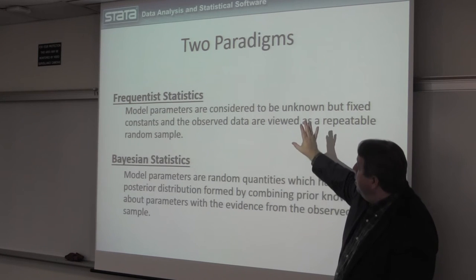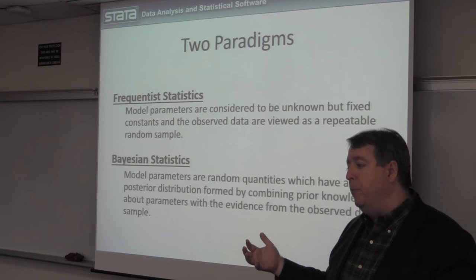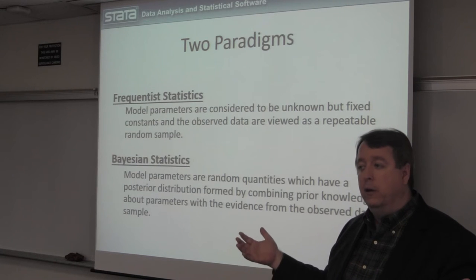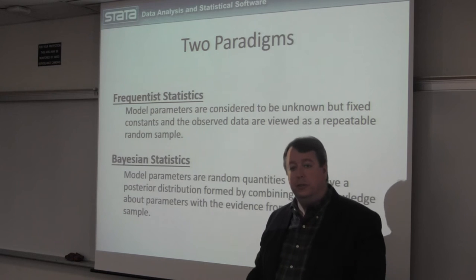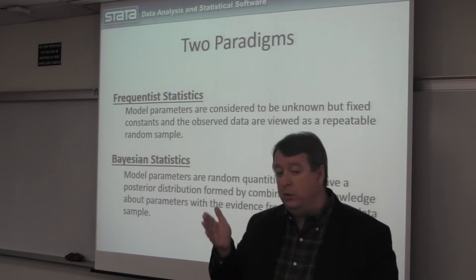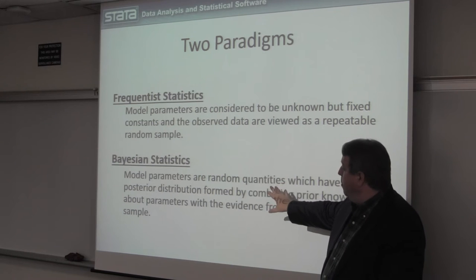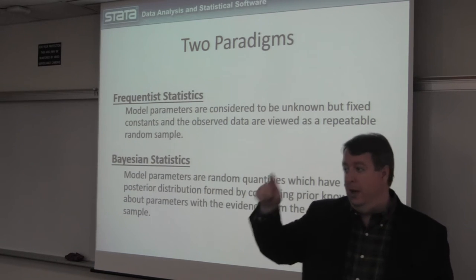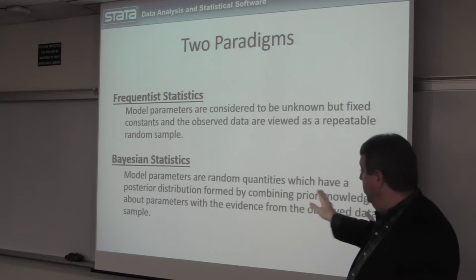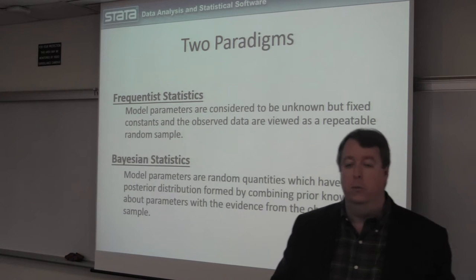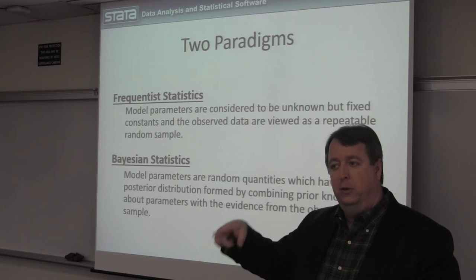Bayesian statistics is a fundamentally different paradigm or way of thinking about statistics. Most of us were trained as frequentist statisticians and that's what we think statistics is, but there's actually another way of thinking about it. As frequentists, we believe that model parameters are fixed but unknown quantities in a population — for example, the average height of people in the United States today is theoretically a knowable number. Bayesians, on the other hand, believe that model parameters are random quantities that have distributions, called a posterior distribution, formed by combining prior knowledge about the parameter with evidence observed from data.